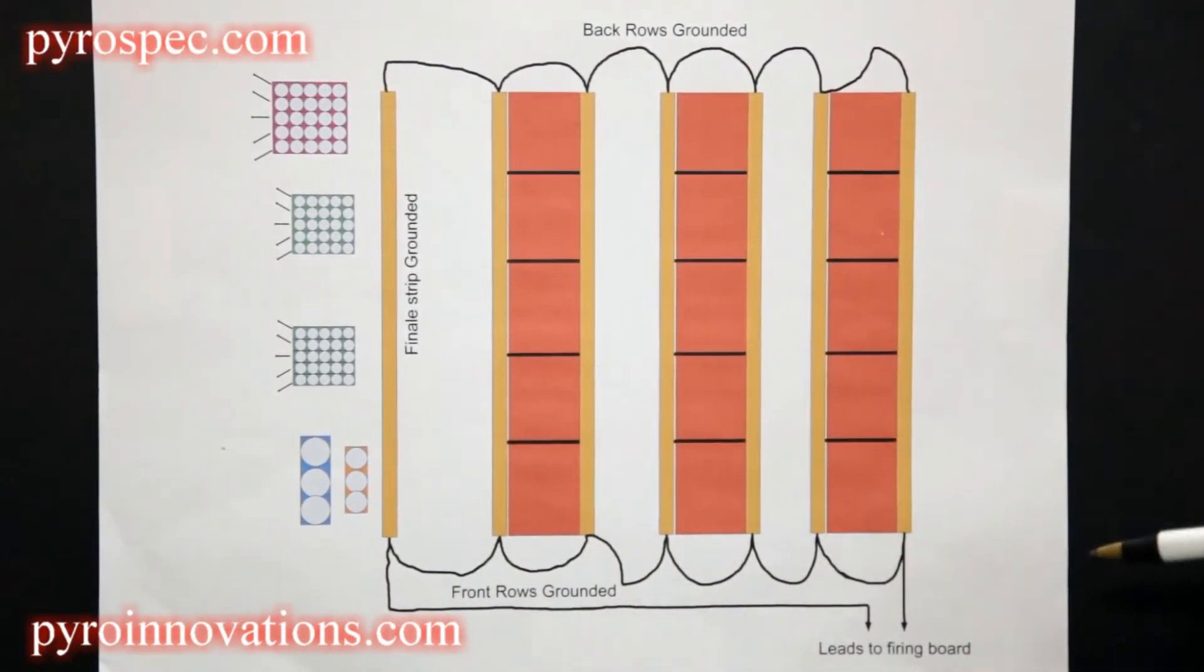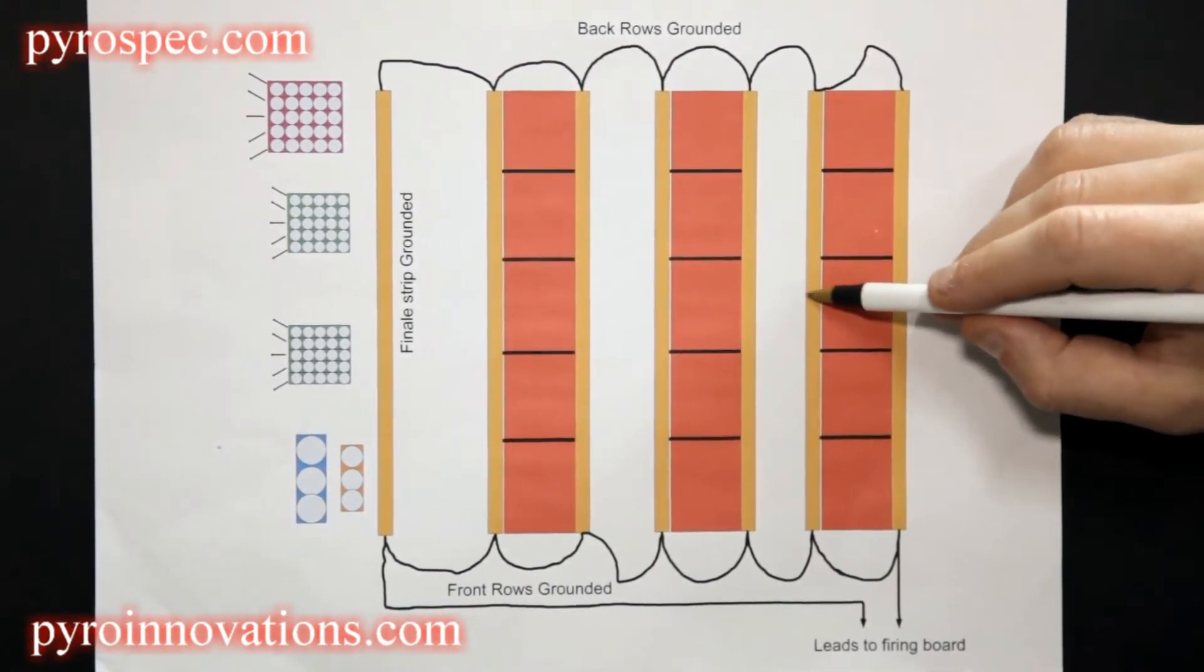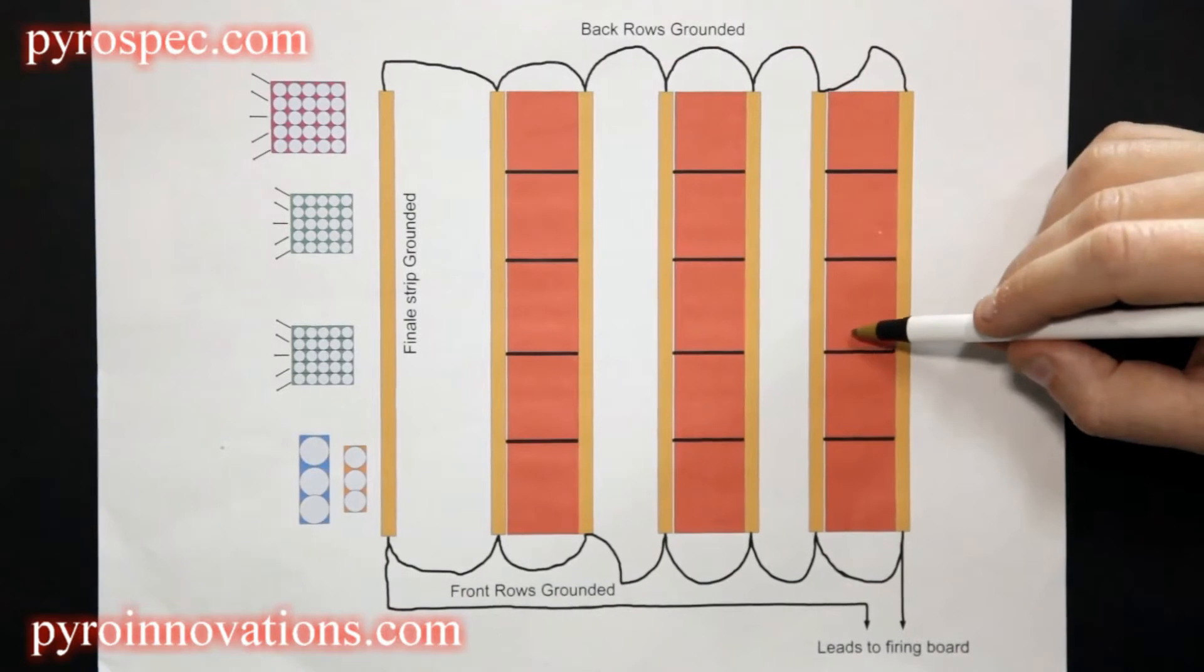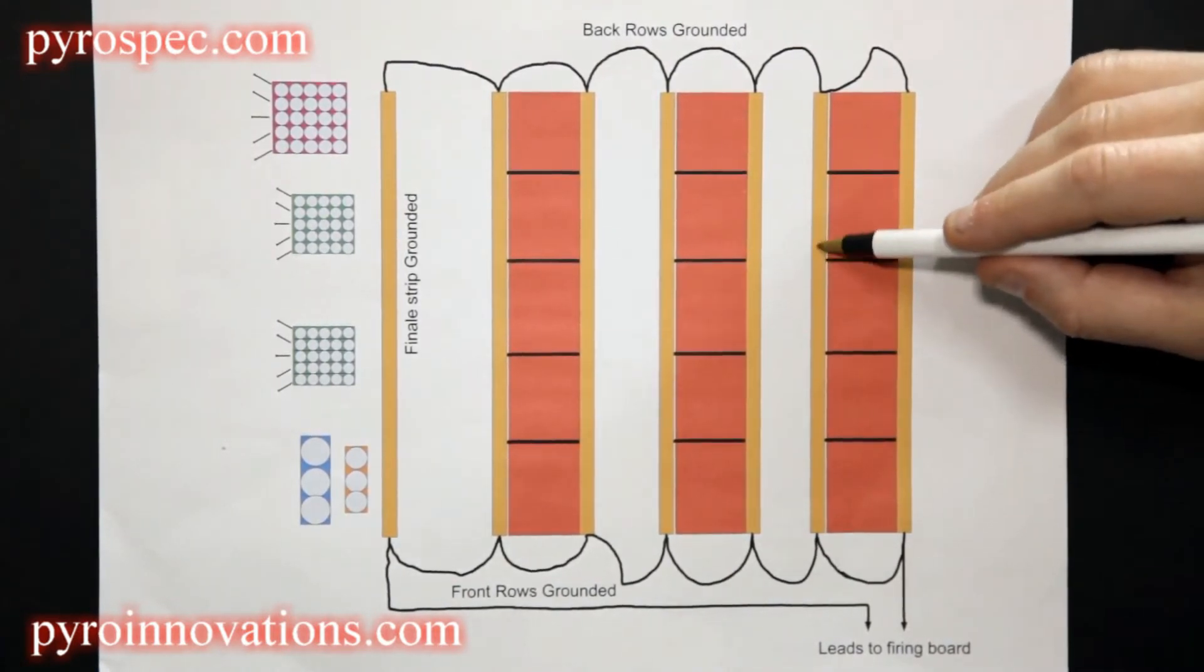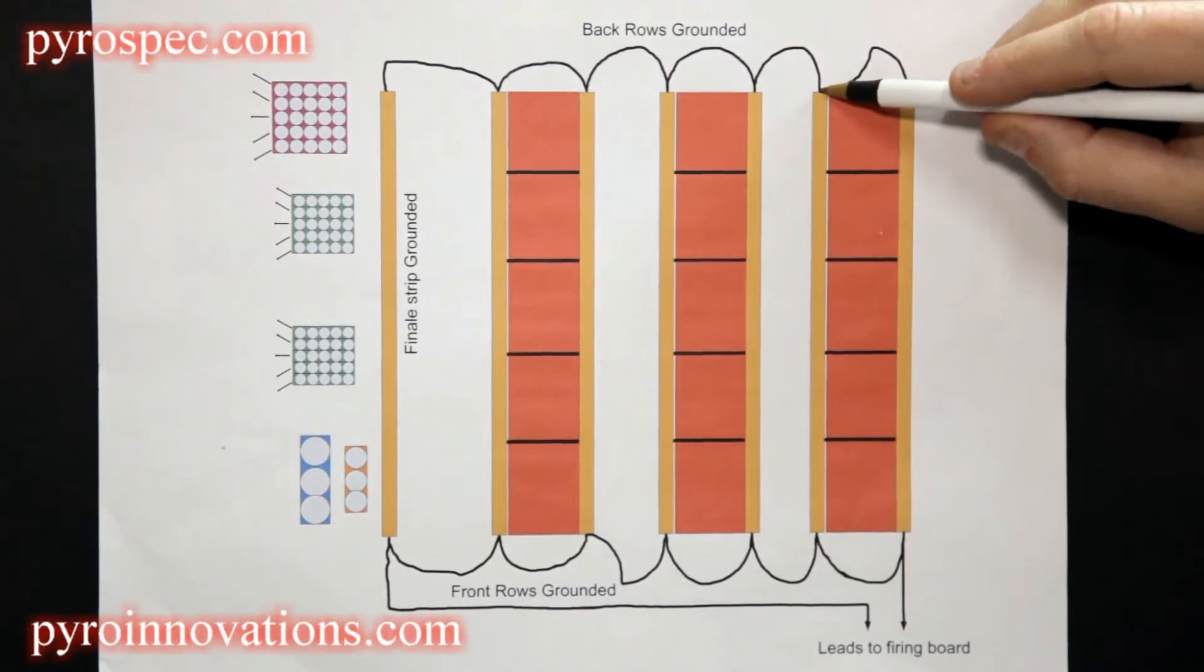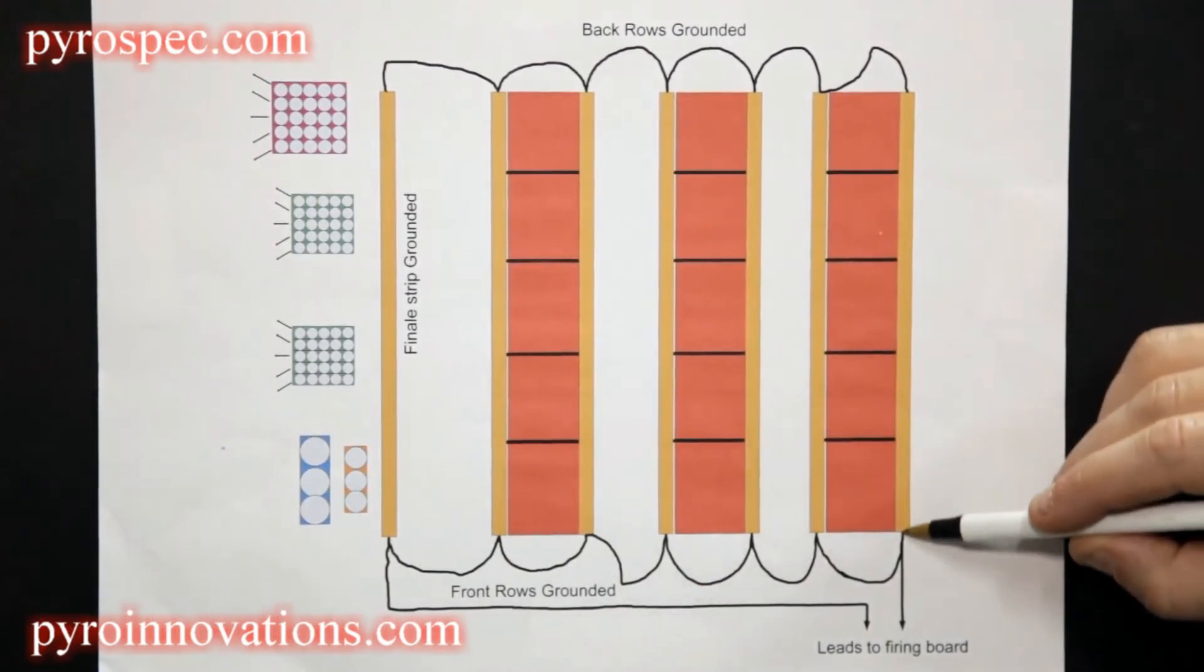Let's use that same example where we have a break in the middle of the show in the internal ground of this strip. Now we have a separate return path since there is a ground wire running internal here through the rear; it can now be grounded through this strip.